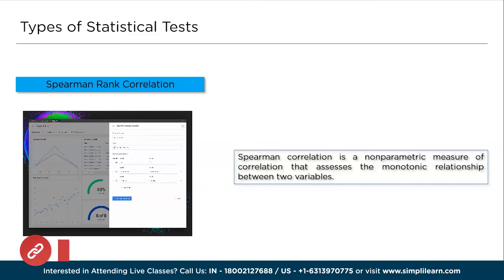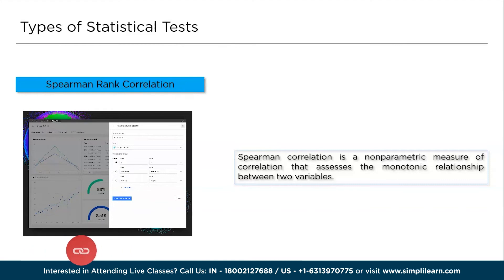Spearman rank correlation (rho) is used when the variables are measured on an ordinal or non-linear scale. The Spearman correlation coefficient ranges from -1 to +1, with -1 indicating a perfect negative monotonic relationship, +1 indicating a perfect positive monotonic relationship, and 0 suggesting no monotonic relationship.